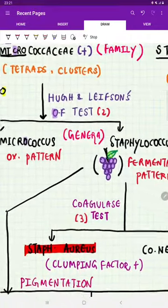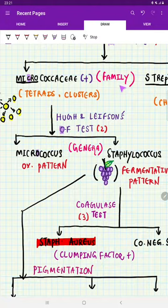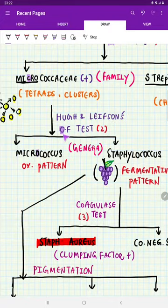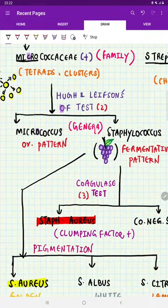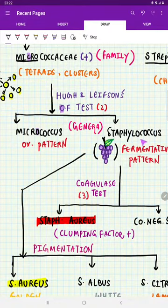Let us complete the micrococcus. Basically, micrococcus is catalase positive. This micrococcus family is further classified by O/F test, Hube and Lifson's O/F test—oxidative fermentation test. If this test gives an oxidative pattern, it becomes micrococcus. If it gives a fermentative pattern, it gives staphylococcus.